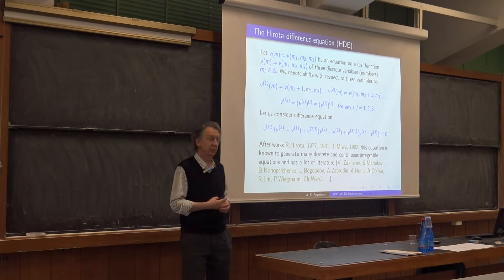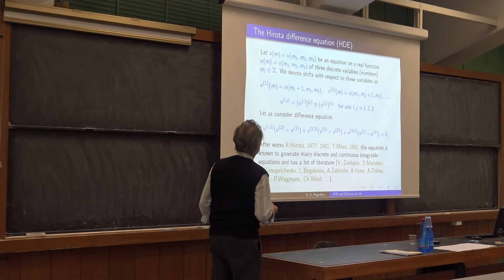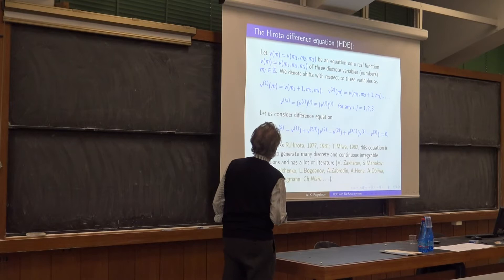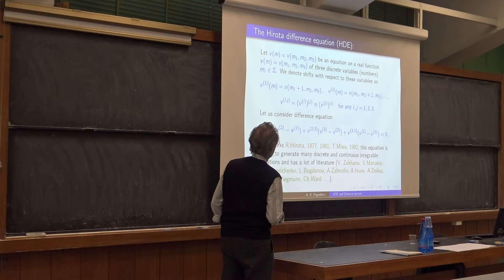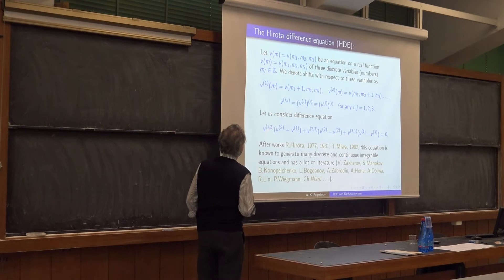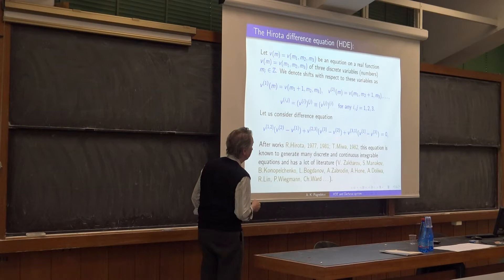This equation is a discrete equation. We are speaking about functions of three variables M1, M2, M3, where M1, M2, M3 are integers. I denote shifts in these variables by numbers in parentheses above — two numbers means two consecutive shifts. The Hirota difference equation in these terms is a bilinear equation: here is a shift with respect to the first variable, second variable, then second minus first.